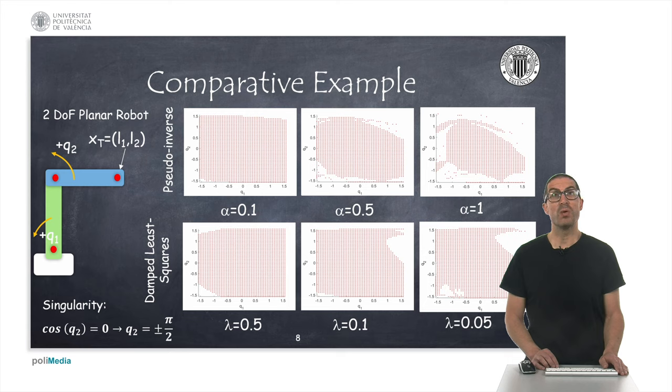This final configuration is obviously known for us, but we seek to know the region that provides numerically stable results and converges to the final solution, in the case of a two degrees of freedom planar robot. We can see that the region of stable solutions degrades with an increase of the iteration step parameter for the pseudo-inverse method.